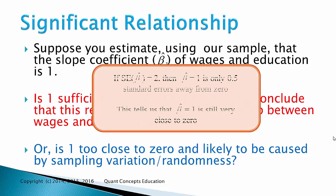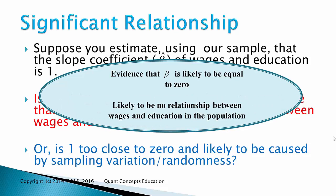However, suppose instead that the standard error is 2. Then a beta hat of 1 is only half a standard error away from 0. This means it's very close to 0. This is evidence that the population beta is likely to be 0 and that there is no real relationship between wages and education.